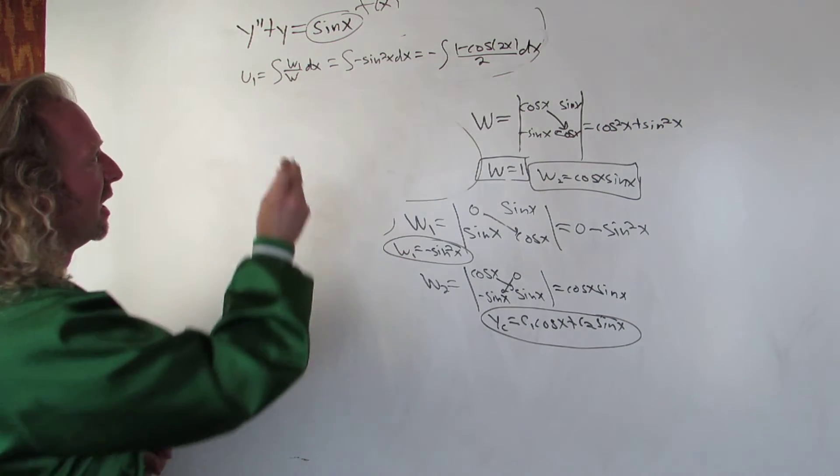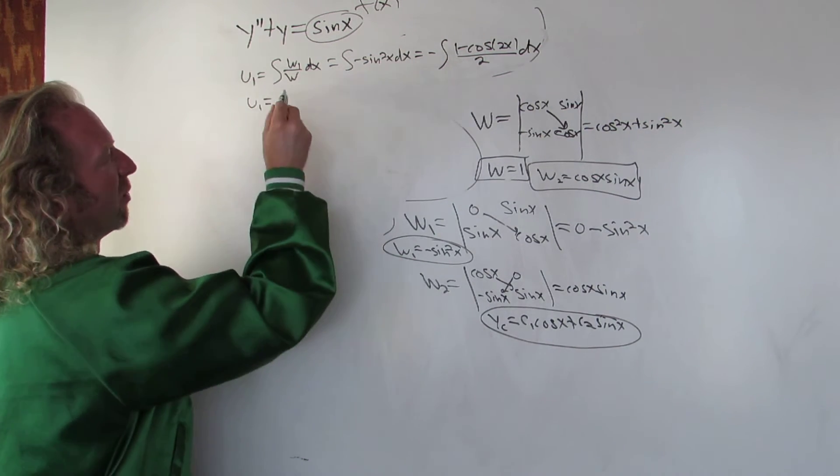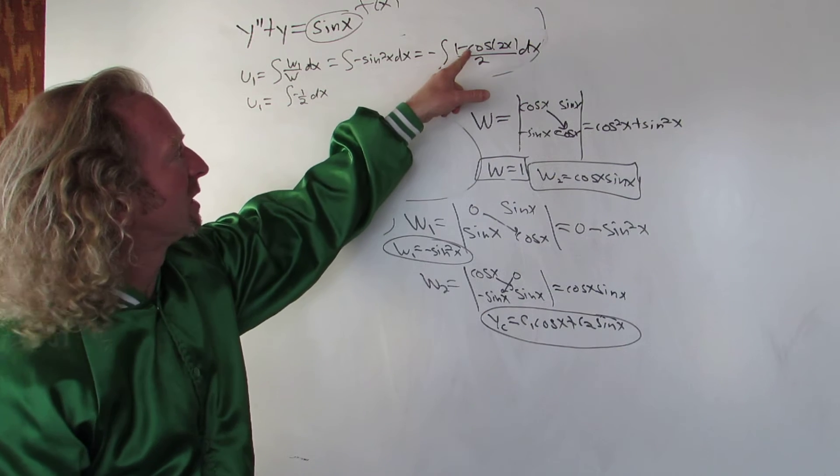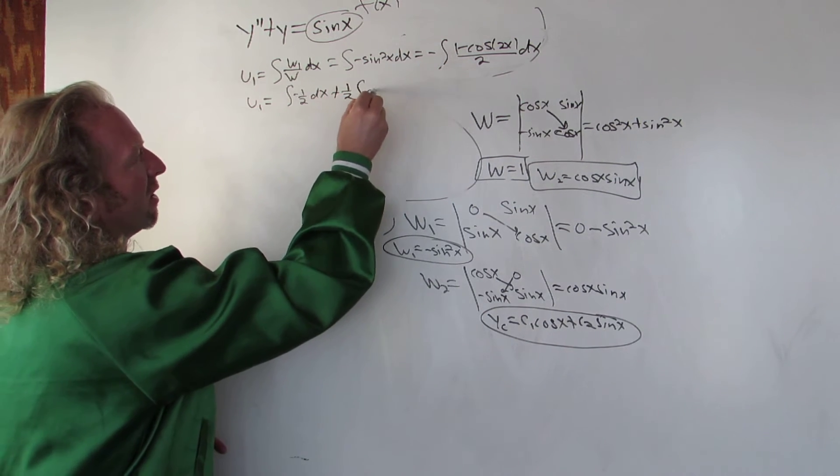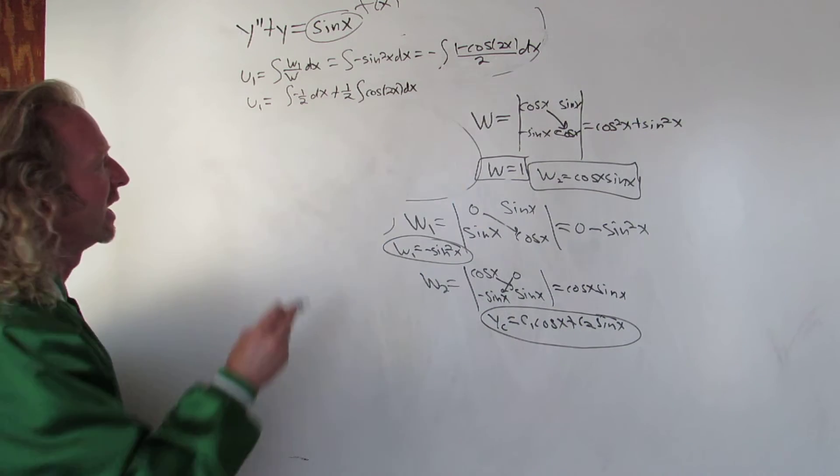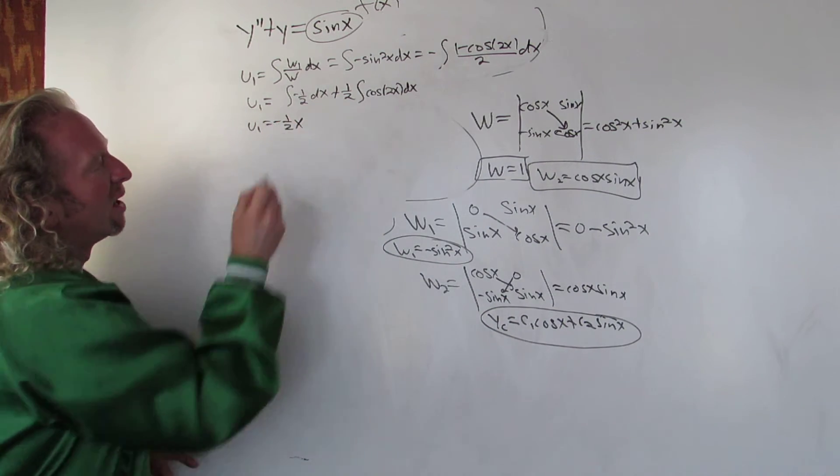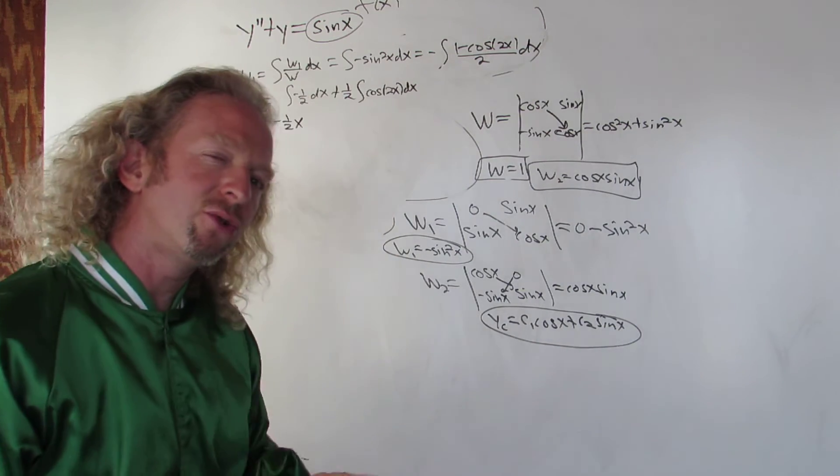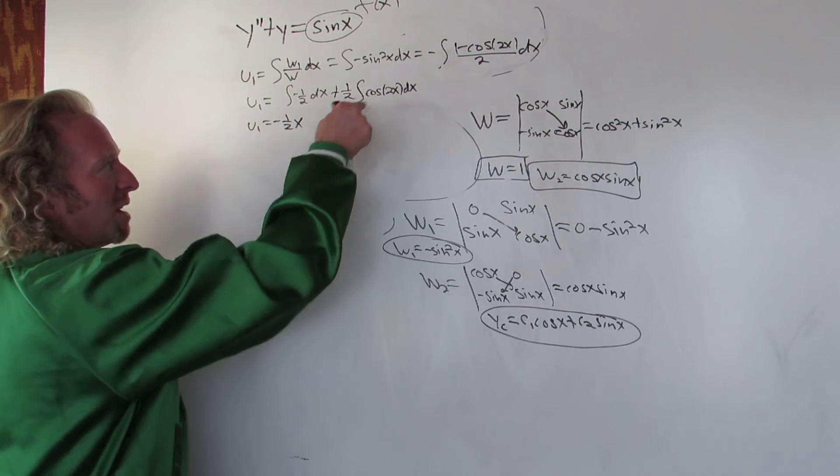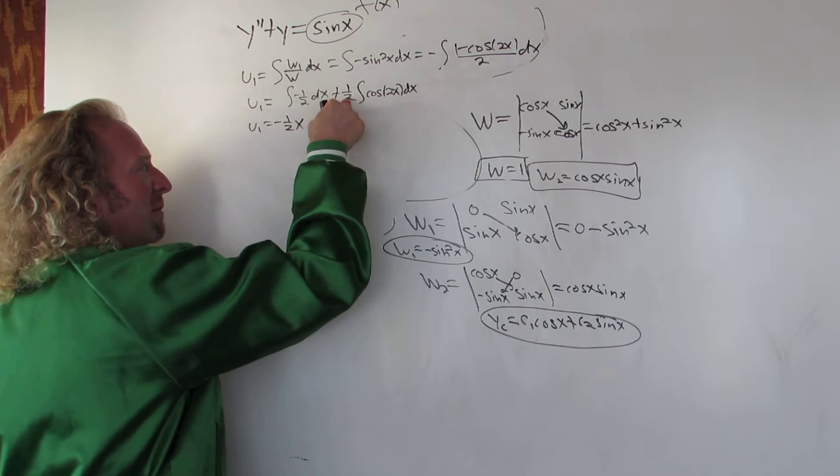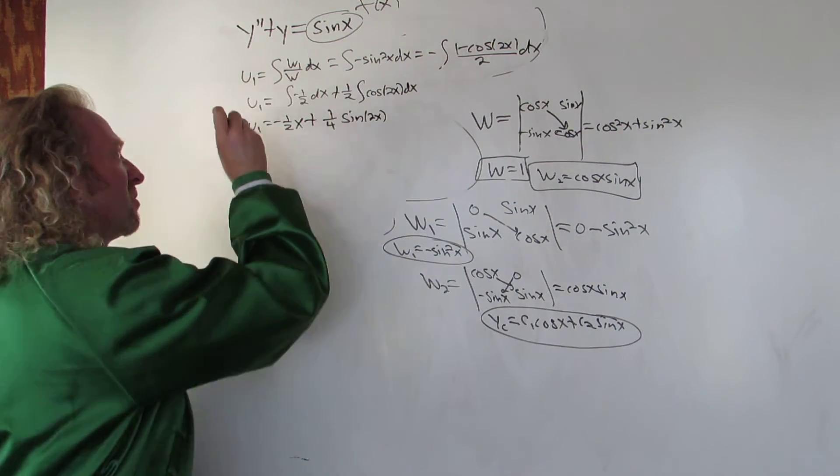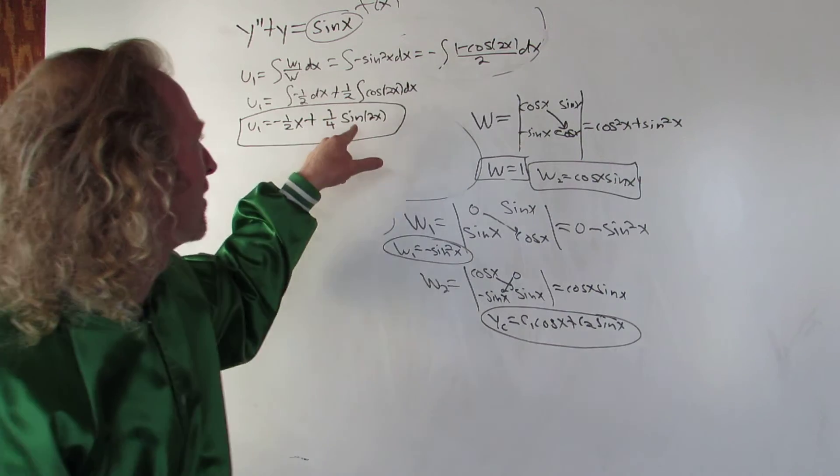How do you integrate negative sine squared x? Use an identity. Sine squared is 1 minus cosine 2x all over 2. So this is going to be negative 1 minus cosine 2x over 2 dx. So u1 is, let's distribute the negative 1 half. It's negative 1 half dx, and distributing it here, it's going to be plus 1 half cosine 2x dx. When you integrate negative 1 half, you just get negative 1 half x. When you integrate cosine, the derivative of sine is cosine. But you have a 2 here, so you just divide by the 2. When you divide by the 2, you multiply by this 2, so it's 1 fourth sine 2x.